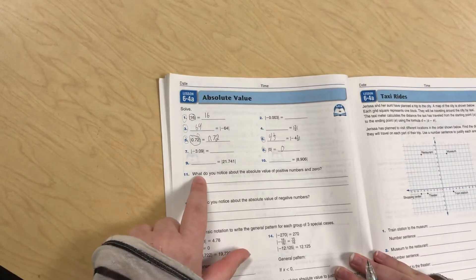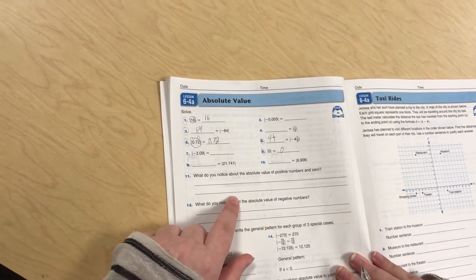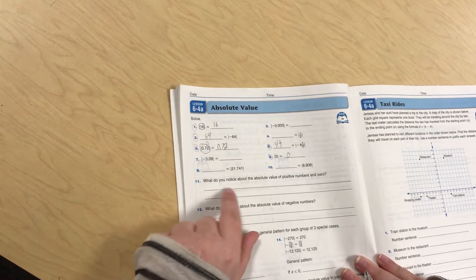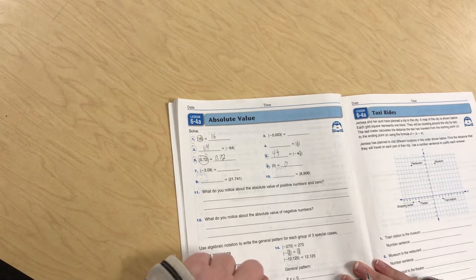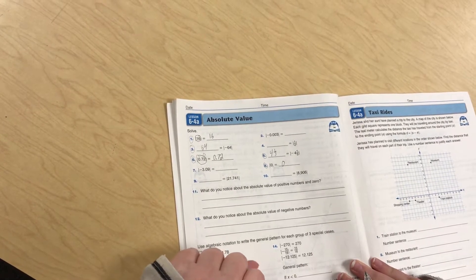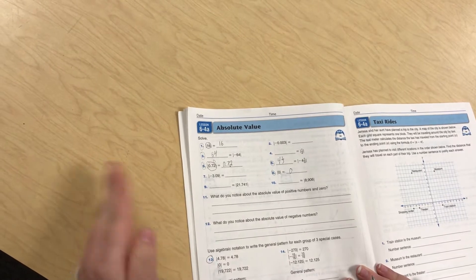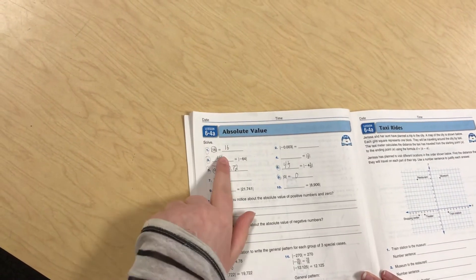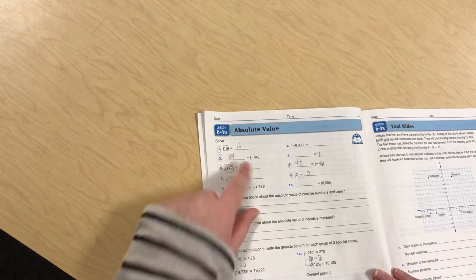It says, what do you notice about the absolute values of positive numbers and 0? A positive number in 0 is how far a positive number is from 0, like up here. This is a positive number from 0, which means it would be 16.